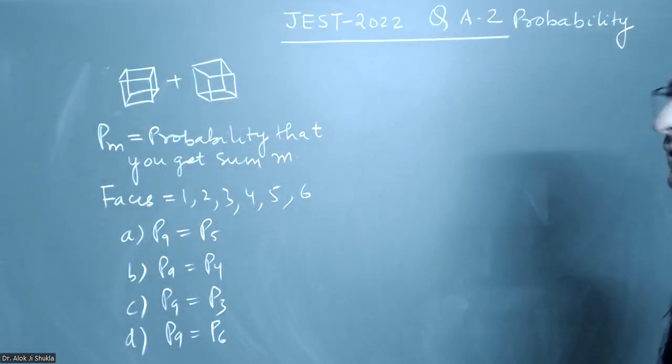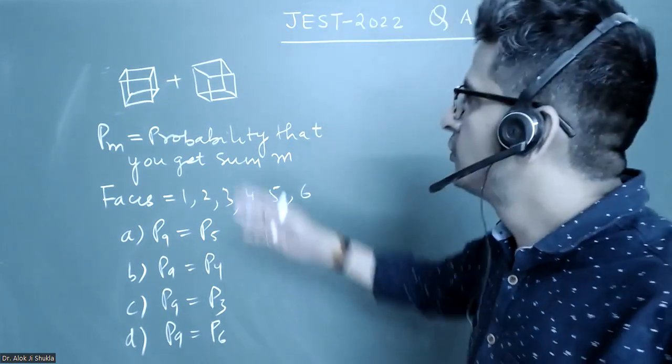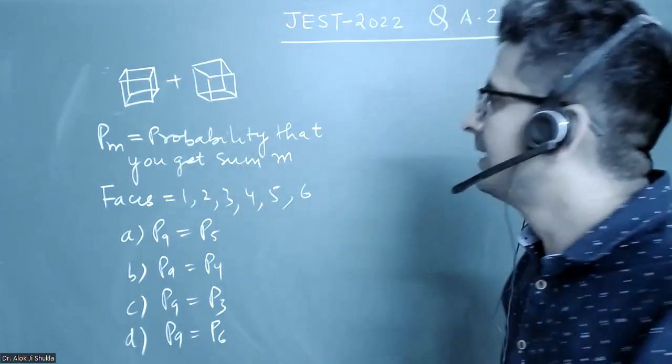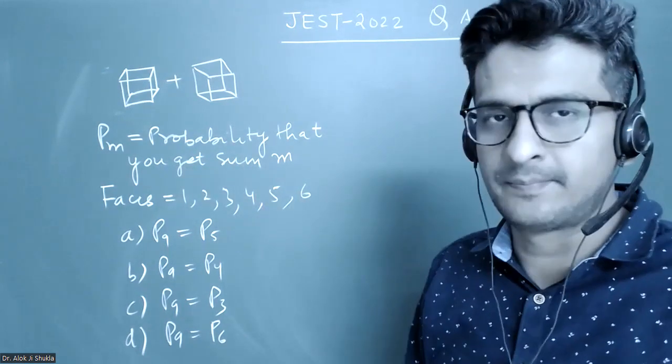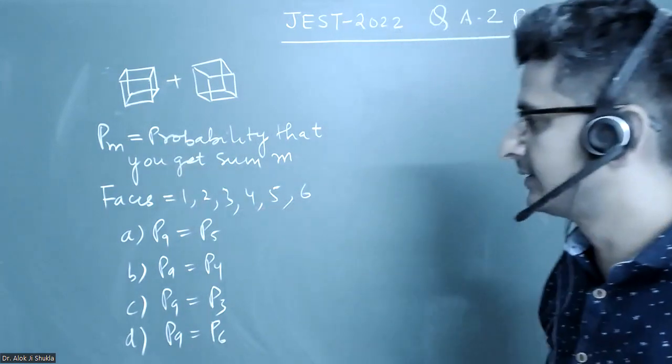This is a question from JEST-2022, a simple probability question in which two dice are given and Pm is the probability that you get a sum of m. The faces are 1, 2, 3, 4, 5, 6.